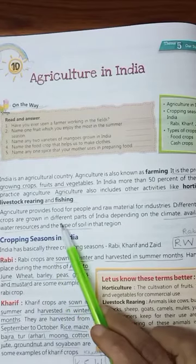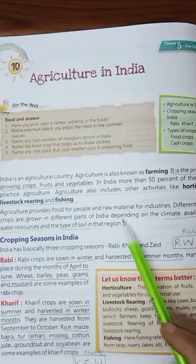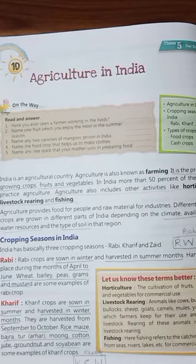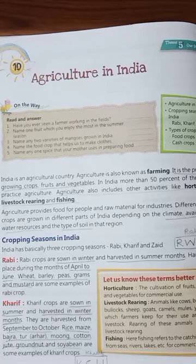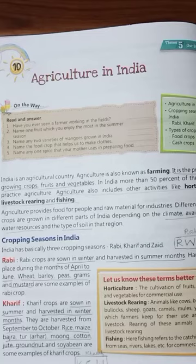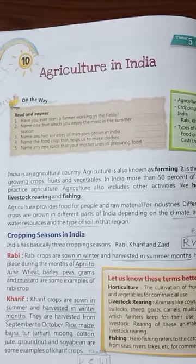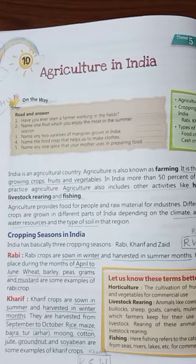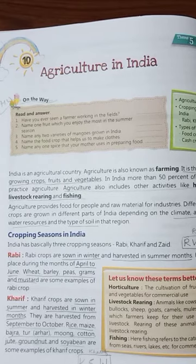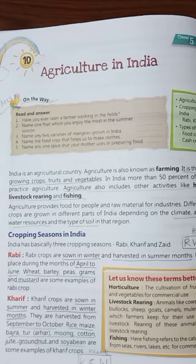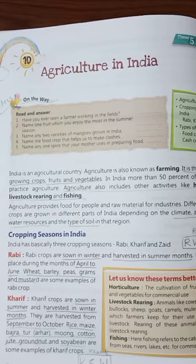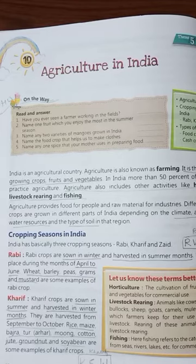Agriculture provides food for people and raw material for the industries. We get cotton and jute from plants. All these things are sent to the factories. From cotton we make clothes, and from jute various things are made — bags, ropes and all these things. So these are the raw materials for making things.